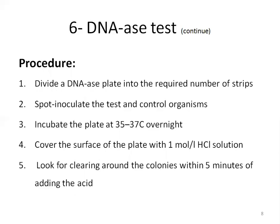Using a sterile loop or swab, spot-inoculate the test and control organisms on the plate, making sure each test area is labeled clearly. Incubate the plate at 35–37°C overnight. Then cover the surface of the plate with 1 mol/L hydrochloric acid solution and look for clearing around the colonies within five minutes of adding the acid.